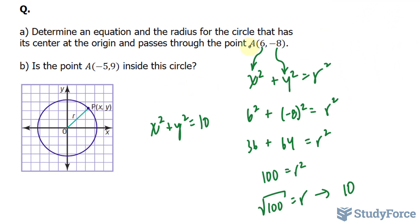Now they're asking, is the point A, which has the coordinates minus 5 and 9, inside the circle? Let's find out. If we substitute minus 5 and 9 into this equation and we end up with a radius that is less than 10, then it lies inside the circle. Let's go ahead and do that.